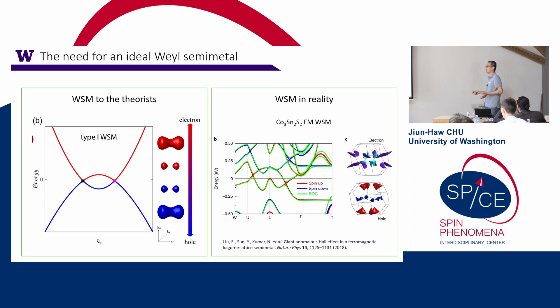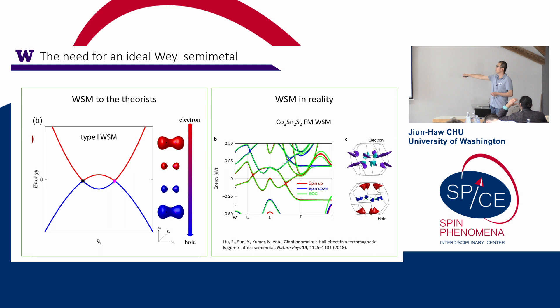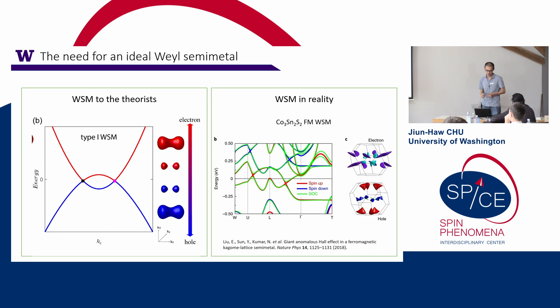What I've presented is really a theorist's ideal — the picture they have in mind when proposing interesting phenomena like chiral anomalies, quantized anomalous Hall effect, or light-matter interactions. It's just two Weyl points with two conduction and valence bands crossing each other and nothing else. But in reality, most Weyl semimetals discovered so far are a mess. For example, the most well-known magnetic Weyl semimetal, Co₃Sn₂S₂, has multiple bands, more than a dozen Fermi pockets, some Weyl points above and some below the Fermi level, and trivial energy bands crossing the Fermi level.